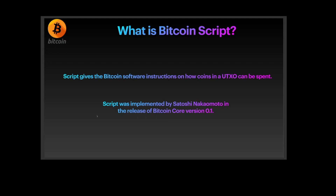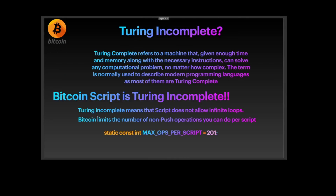Bitcoin Script was implemented by Satoshi Nakamoto in the release of Bitcoin Core version 0.1. Bitcoin Script is Turing incomplete, whereas Ethereum's script is Turing complete. Turing complete refers to a machine that, given enough time and memory along with the necessary instructions, can solve any computational problem no matter how complex. Bitcoin Script being Turing incomplete means it does not allow infinite loops.